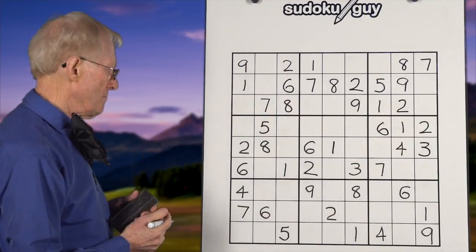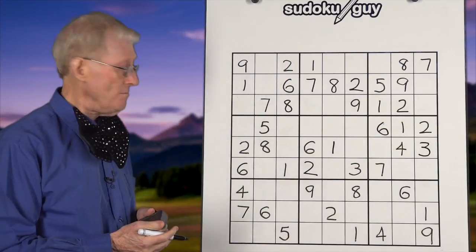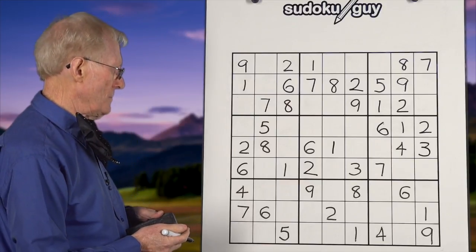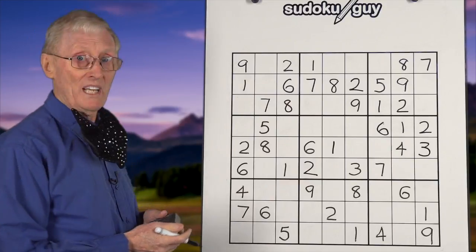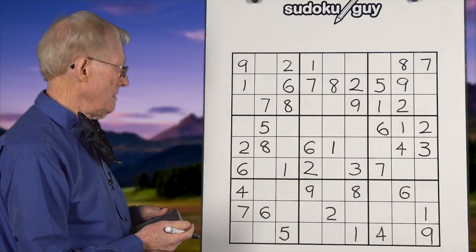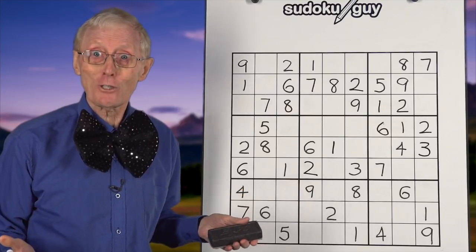For 7s: there's only one 7. For 8s: only one 8. For 9s: there are no 9s at all. So we move down to the bottom three horizontal blocks.